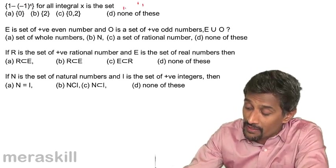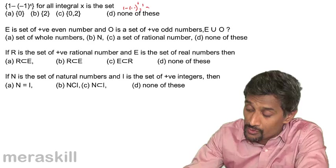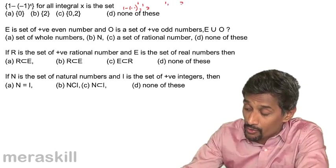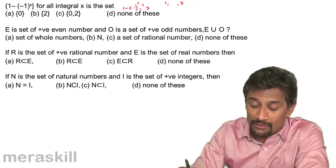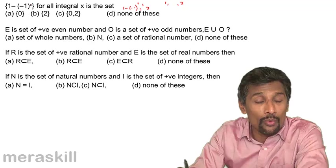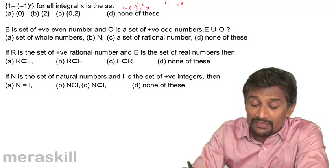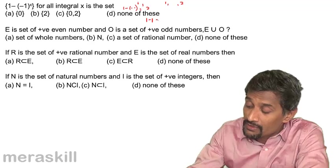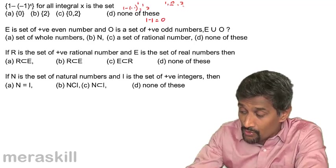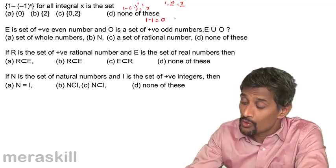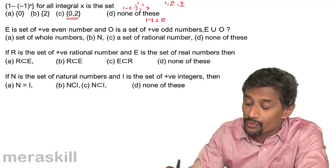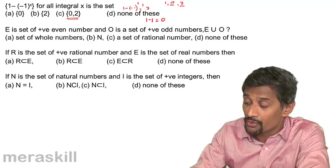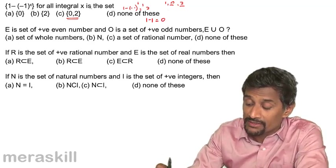So it could attain value 1 or 2, not more than that. Suppose x is an even number like 2 or something. In that case (-1)^2 is positive, so it's effectively 1 - 1 = 0. So the minimum value that could be attained is 0 and the maximum value is 2.